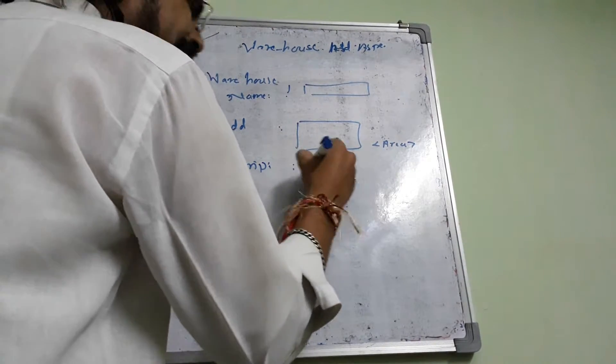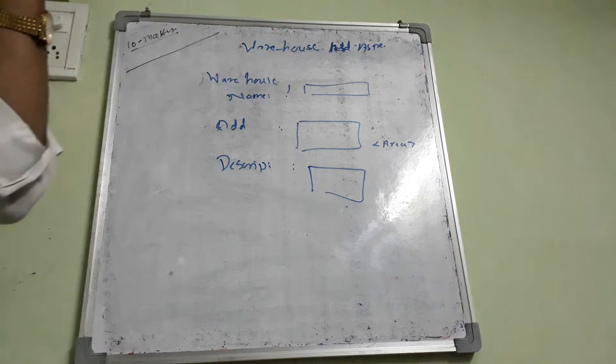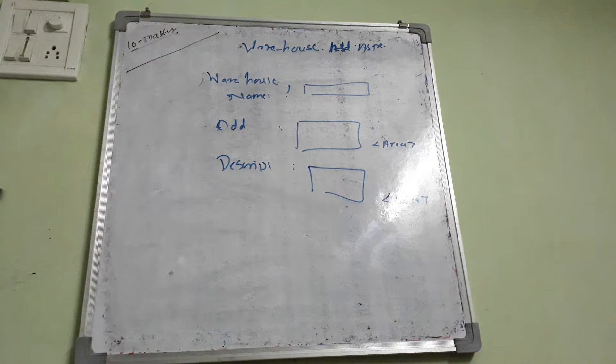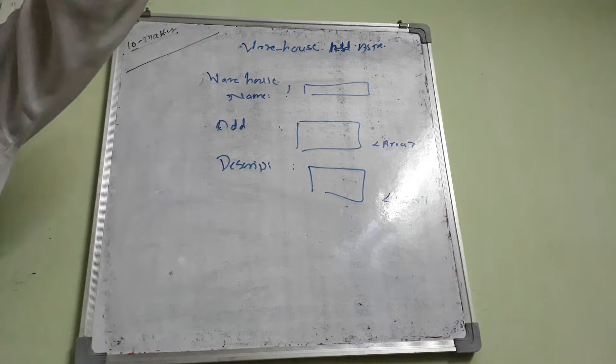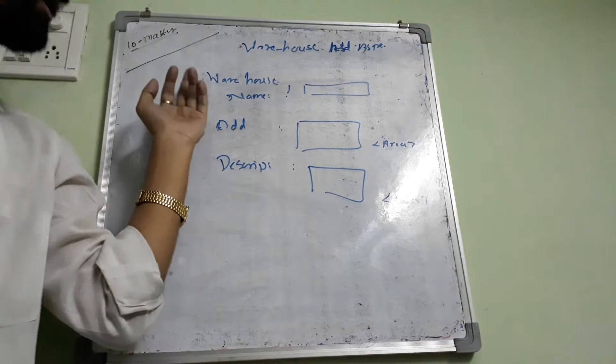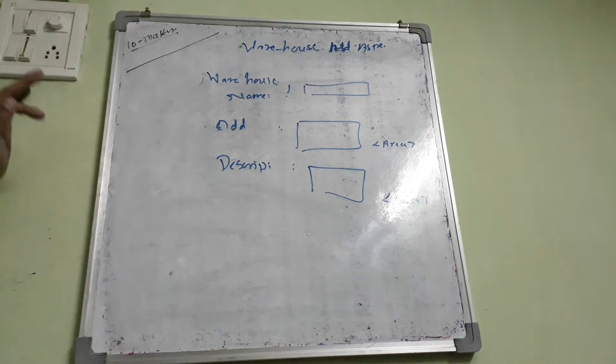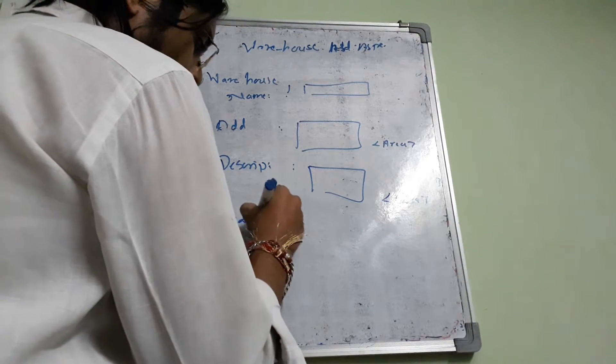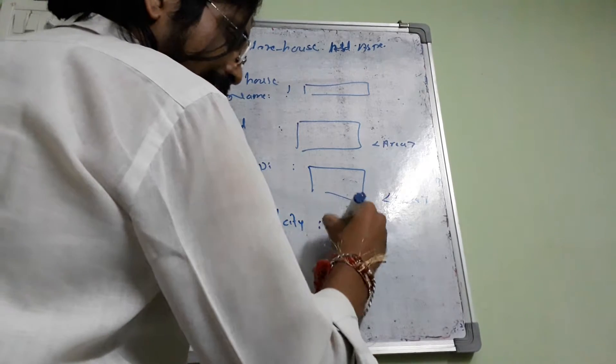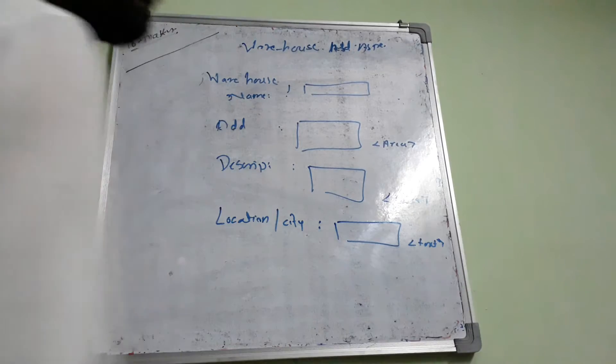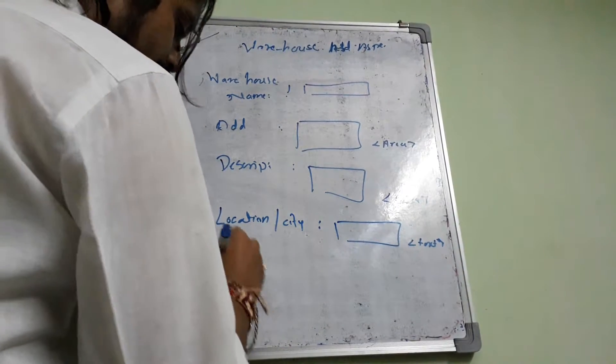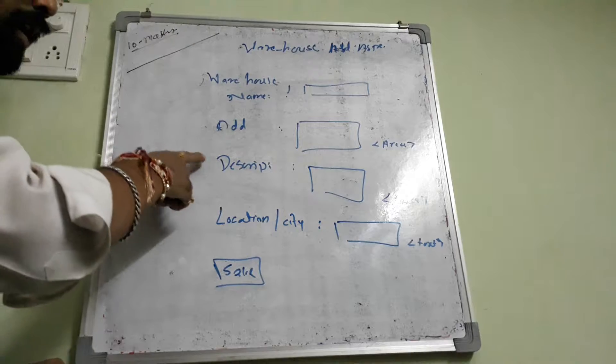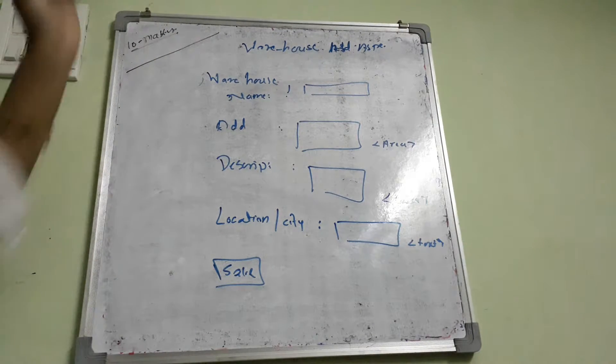Maybe company wants to write some description about this particular warehouse, so description text area. When you read warehouse drop-down value fill that, search name. Warehouse name, location, address detail address. Location city, text box. Save button, simple save insert query firewall database: name, address, description, location, city id consider.